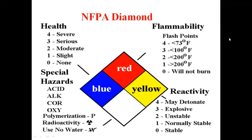The number in the blue section indicates the level of health hazard. If it is 0, it means there is no health hazard. If it is 1, it is a slight hazard. If it is 2, it is a moderate hazard.